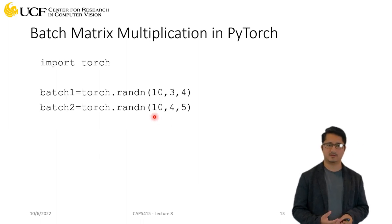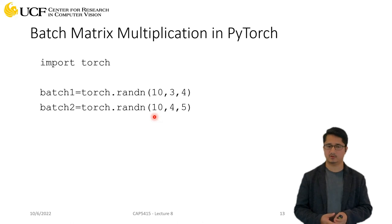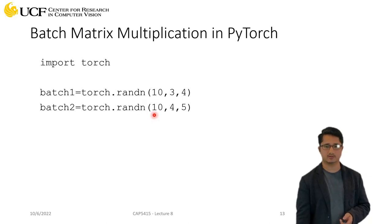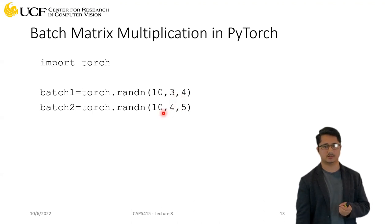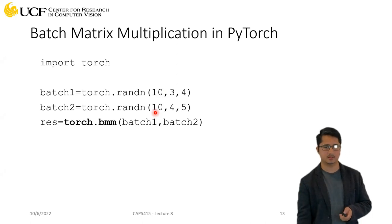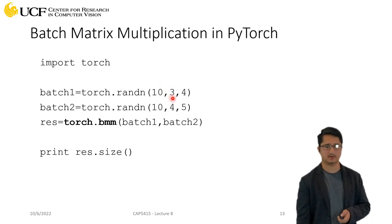When training, you work with mini-batches, so PyTorch also supports batch matrix multiplication using torch.bmm. For example, a batch of 10 matrices each of shape 3×4 multiplied with a matrix of shape 4×5 gives a batch of 10 result matrices each of shape 3×5, since each sample is processed independently and 4 is the shared axis.